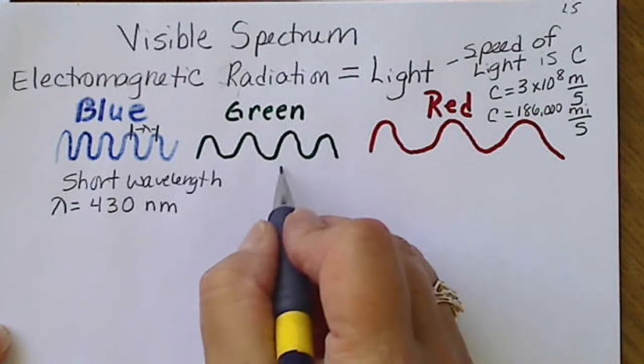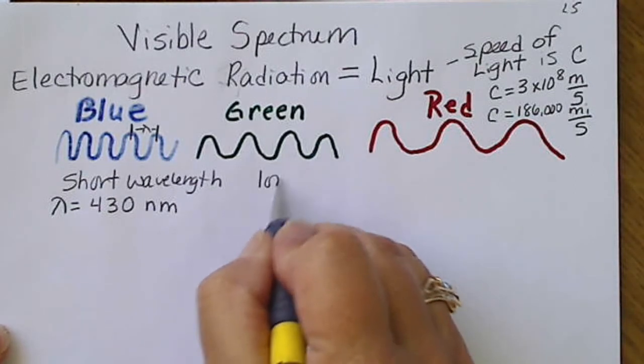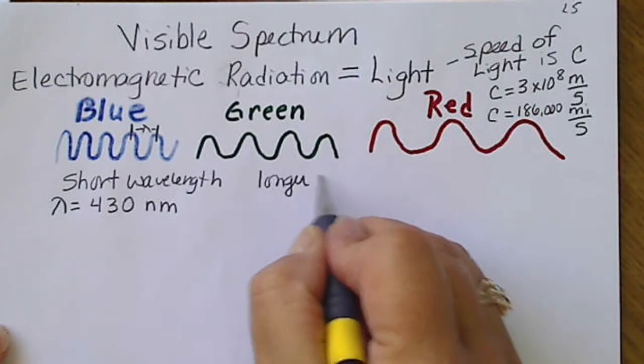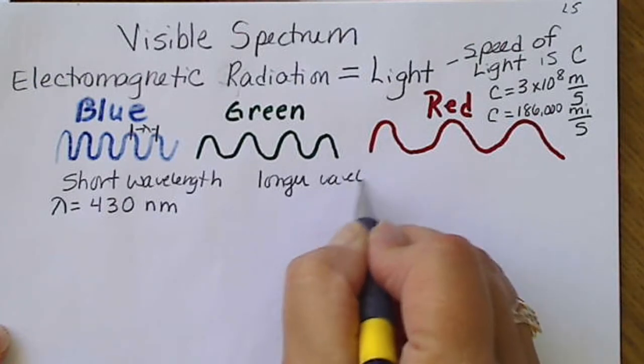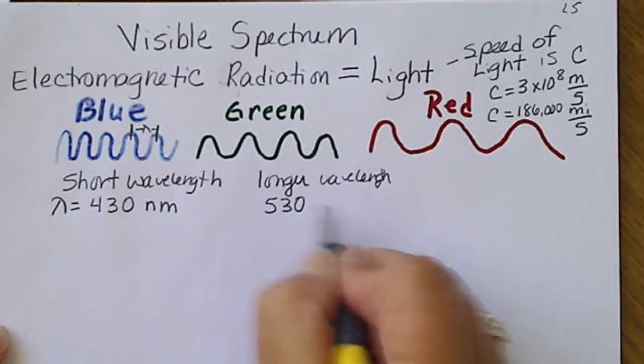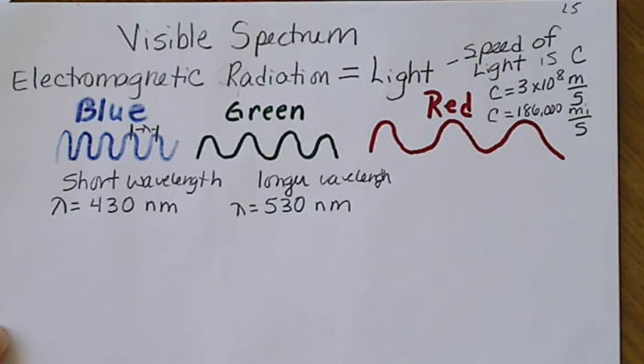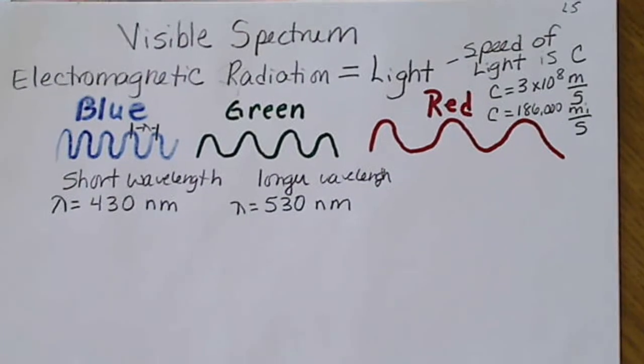Green light has a longer wavelength and occurs around 530 nanometers. So the wavelength of green light is a little bit longer than the wavelength of blue light.